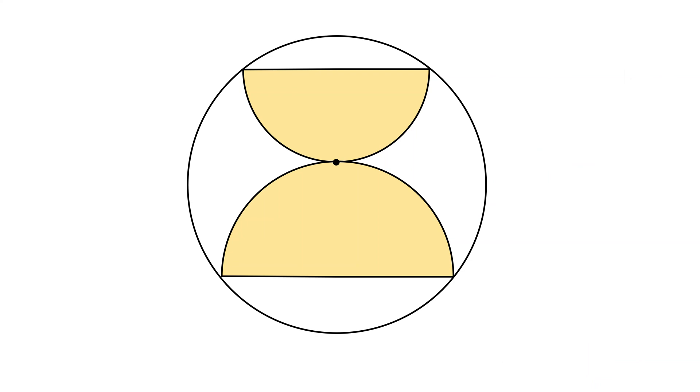We are going to use the method of considering extreme cases to solve this problem. Because the question has not specified how big or small the semicircles are, what we do is to reduce the size of any one of the semicircles, say the upper one, like this.